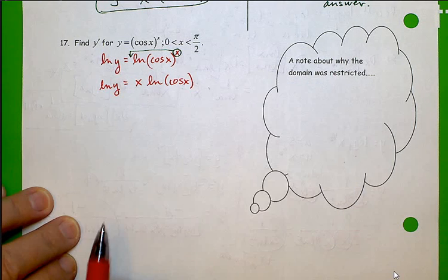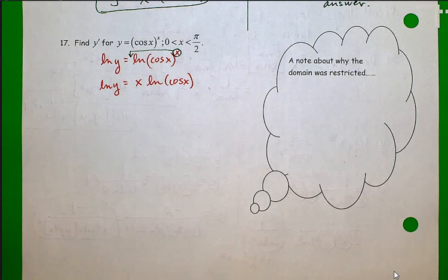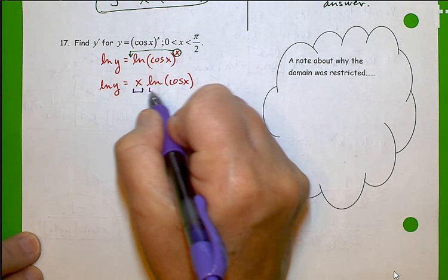Now here we are. We know how to do all of these. We know the derivatives to all of these. If you take a look at the right though, we do have product rule we're going to have to deal with. That's okay.